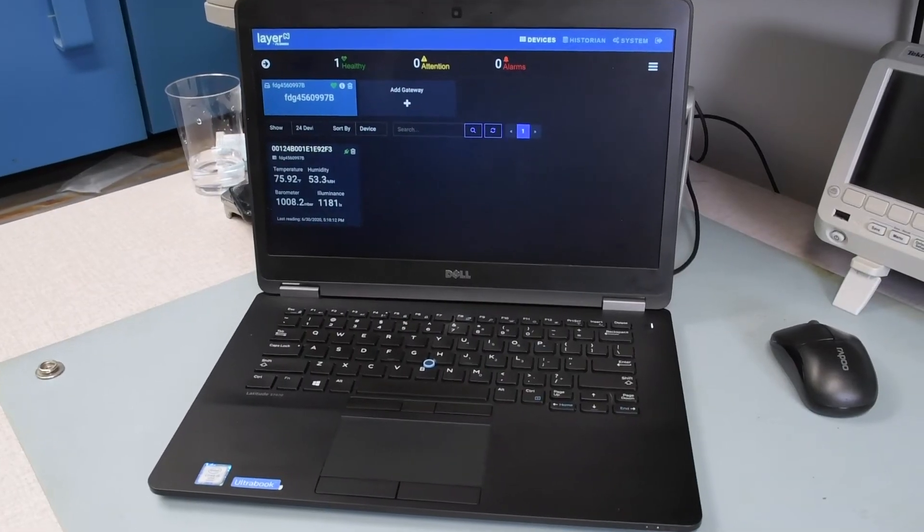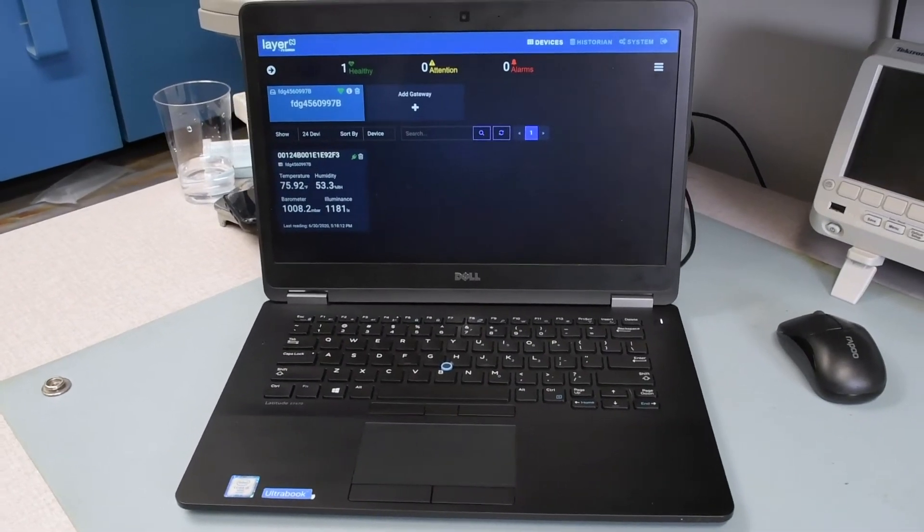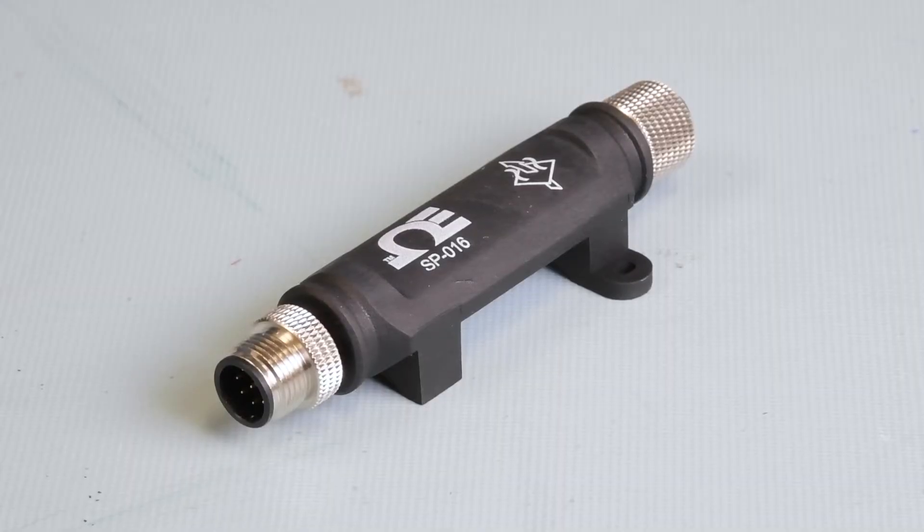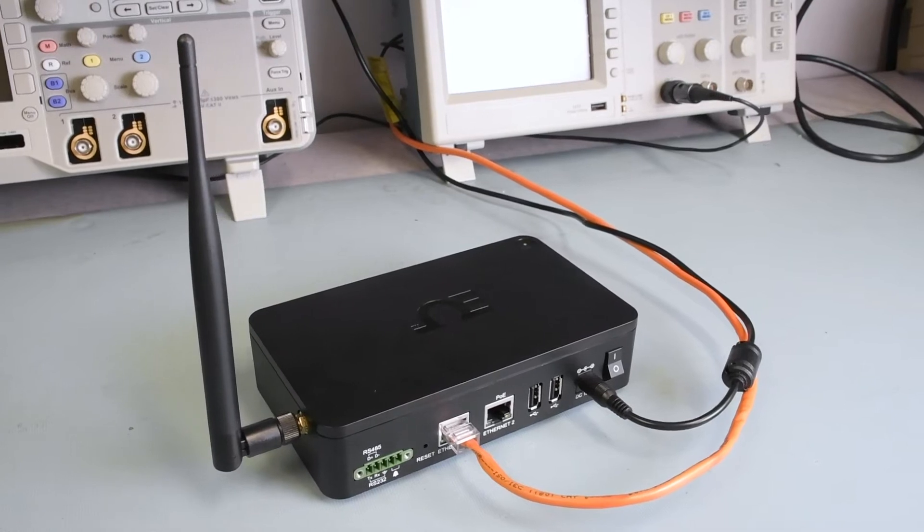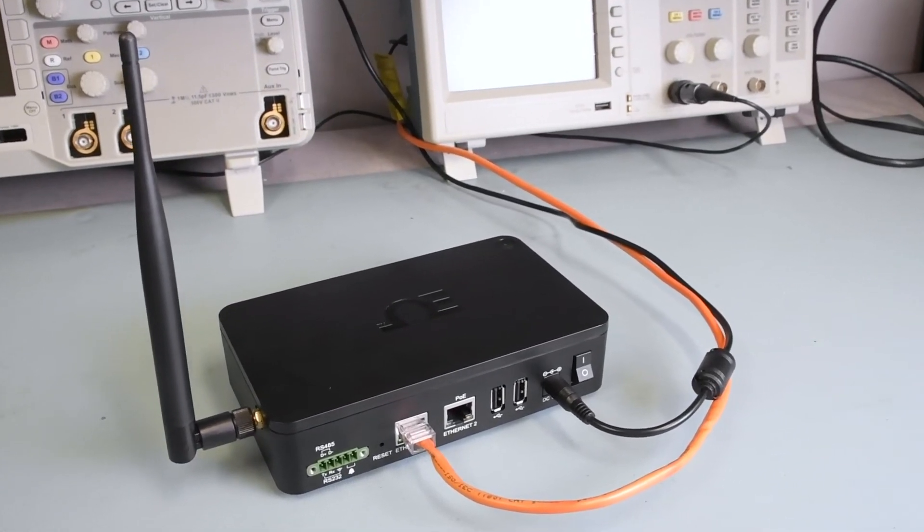A Windows laptop logged into an Omega cloud account and running sync configuration software, and of course, our Layer-N SP016 heat flux smart probe. And rounding out our system is the Layer-N gateway that's been registered and logged into our Omega cloud account.